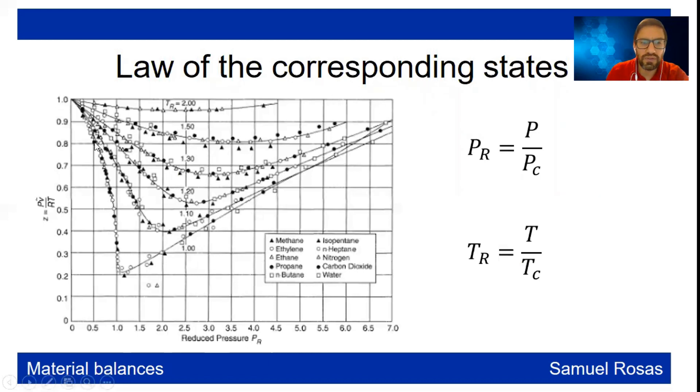So this is a chart of the reduced temperature and the reduced pressure, and you have different substances, and you can see that there is a behavior. With this you can obtain what is here the z, which is the compressibility factor. You can just obtain a value of the reduced pressure, a value of the reduced temperature. If you get a reduced pressure of two, then you're going to mark a line here.